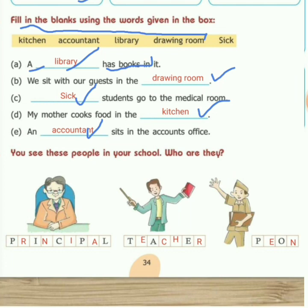Now let's come to question number 4. You see these people are in your school — who are they? There are a few pictures and we have to look at each picture and recognize who they are, as they work for the school. The first picture is of the principal. The spelling of principal is P-R-I-N-C-I-P-A-L.